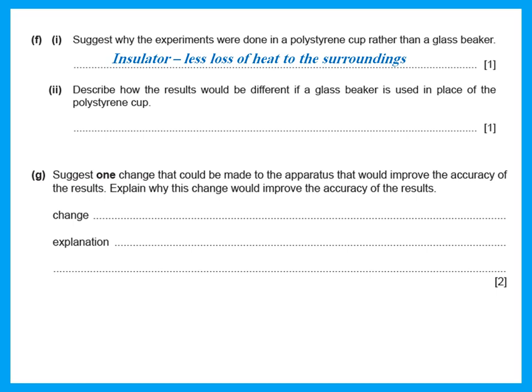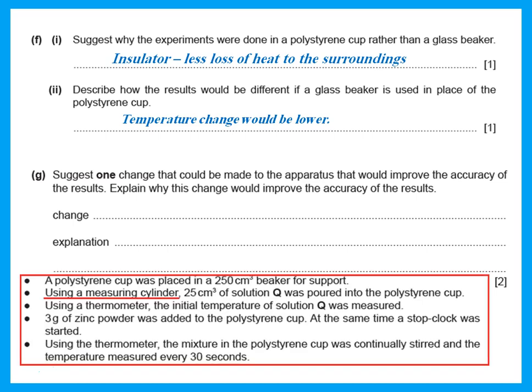Describe how the results will be different if a glass beaker is used. If we use glass beakers there will be loss of heat to the surroundings, meaning the temperature change would be lower than it should be. For one change that could be made to improve accuracy: he used a measuring cylinder to measure 25 cm³ of solution — we should use a pipette instead, because that gives a more accurate volume.